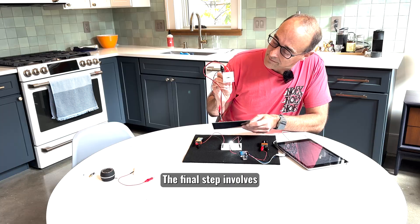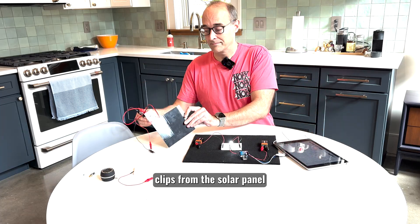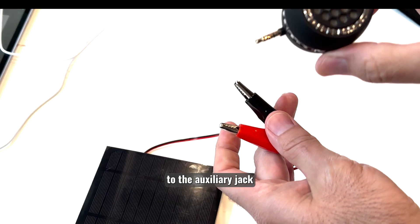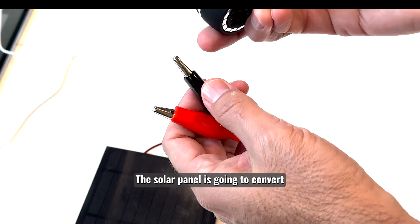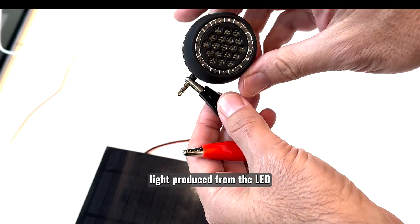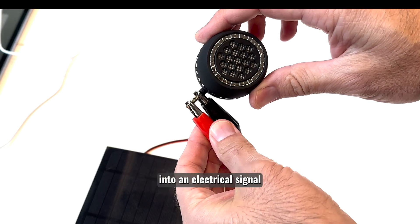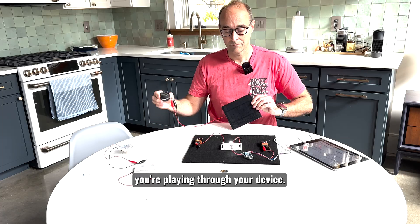The final step involves connecting the alligator clips from the solar panel to the auxiliary jack on a small powered speaker like you see here. The solar panel is going to convert light produced from the LED into an electrical signal that matches the original audio you're playing through your device.